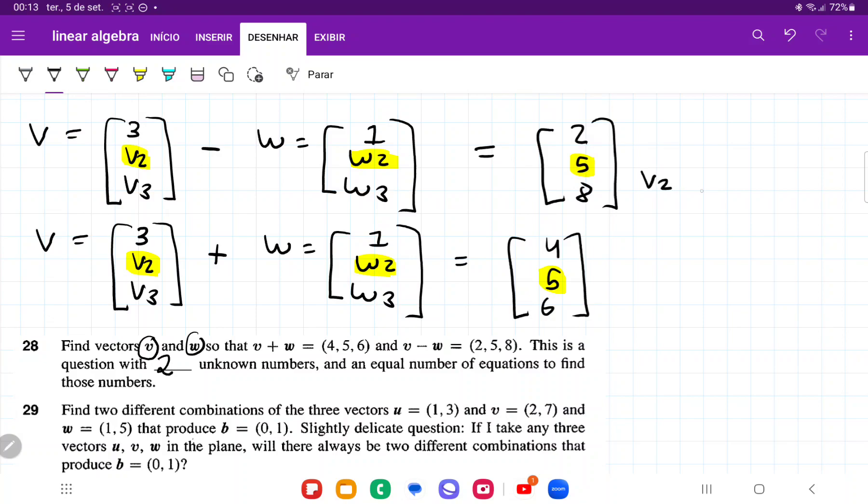We have v2 minus w2 equals 5, and v2 plus w2 equals 5 as well. When we add this, we get 2v2 equals 10, therefore v2 equals 5.